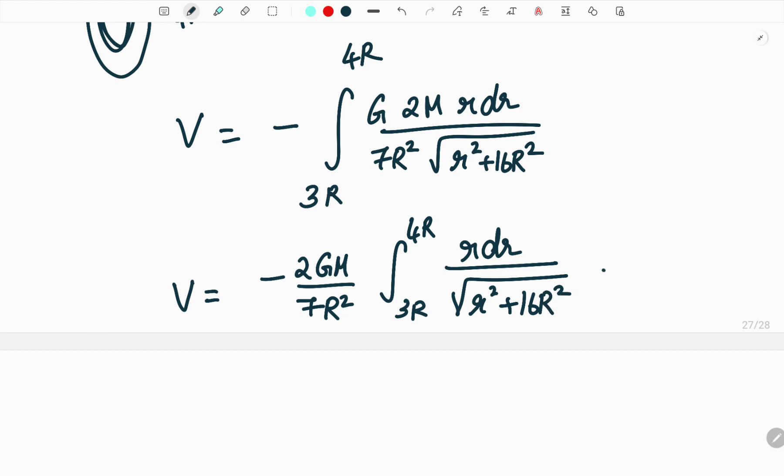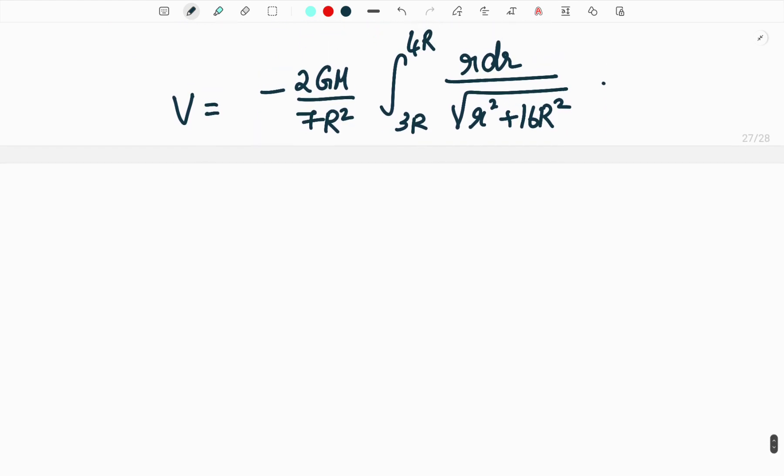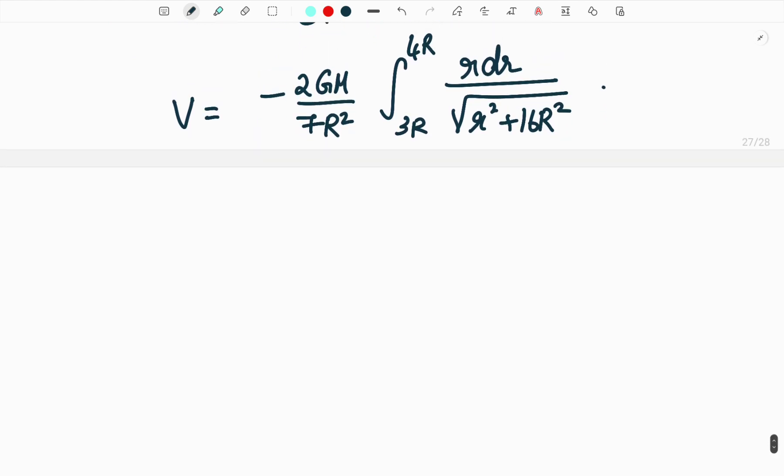Now we have to solve this integral, that's all then you will get the answer. So to solve this what we will do is see this r is inside a square root. So in order to remove it we will consider let x square equal to, already we know x square is equal to r square plus 16r square.